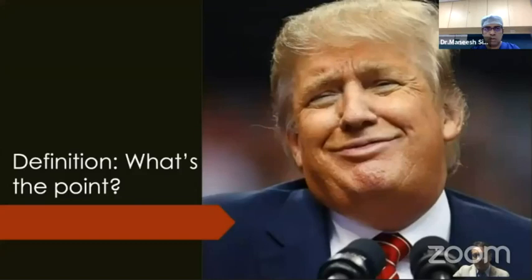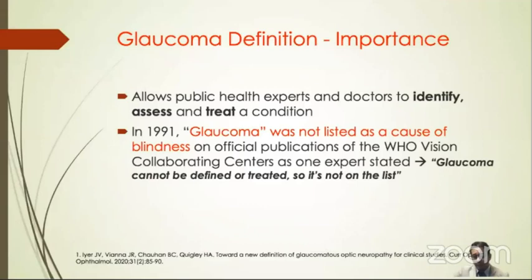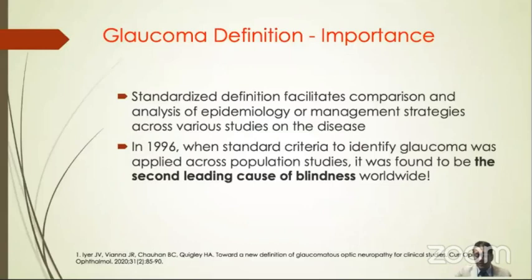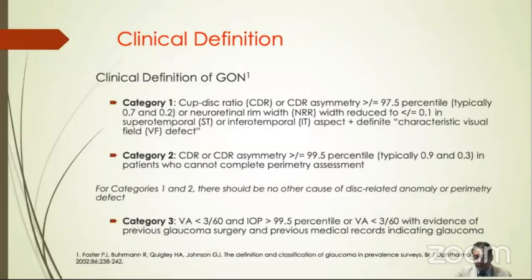Is there any point defining a disease? About 30 years ago when glaucoma was not defined, it was not even listed as a cause of blindness in many official publications of the WHO, because as one expert stated, if it can't be defined or treated, it's not on the list. A few years later, when they applied definitional criteria to various epidemiological studies, they found glaucoma to be the second leading cause of blindness.